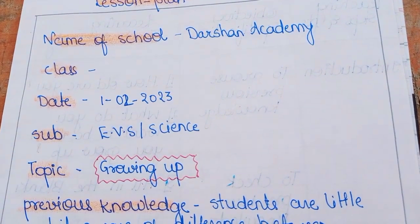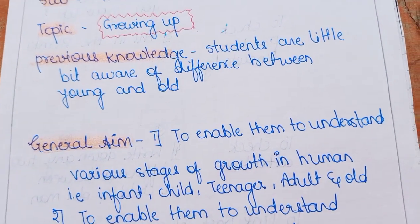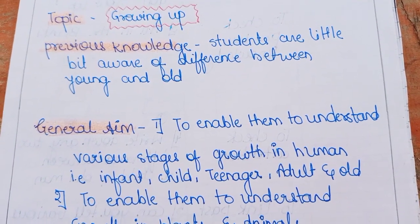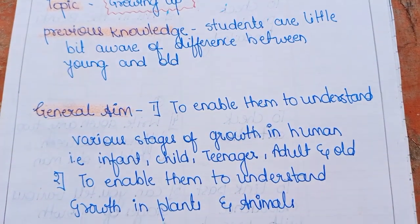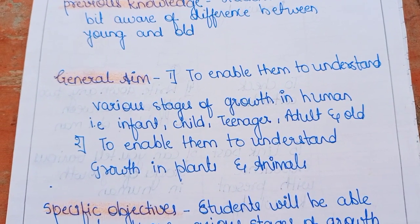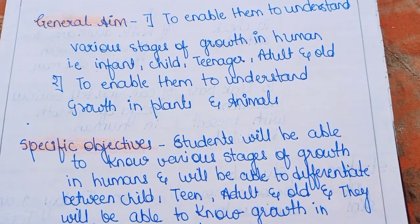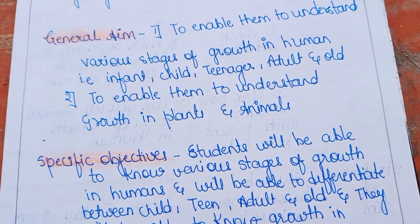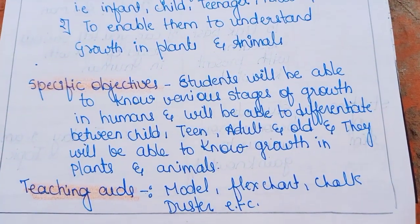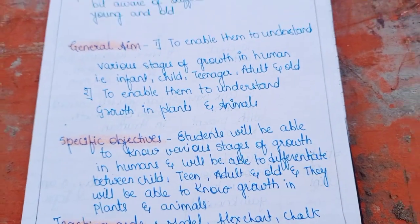Here you can see we have to write the date, and the subject is EVS or Science, the topic is 'Growing Up.' For previous knowledge, we write what students are already aware of. For general objectives, we write things like enabling students to understand the various stages of growth in humans — infant, child, teenager. For specific objectives, we write our aim and objectives behind teaching students. For teaching aids, we write whatever teaching aids we are going to use.